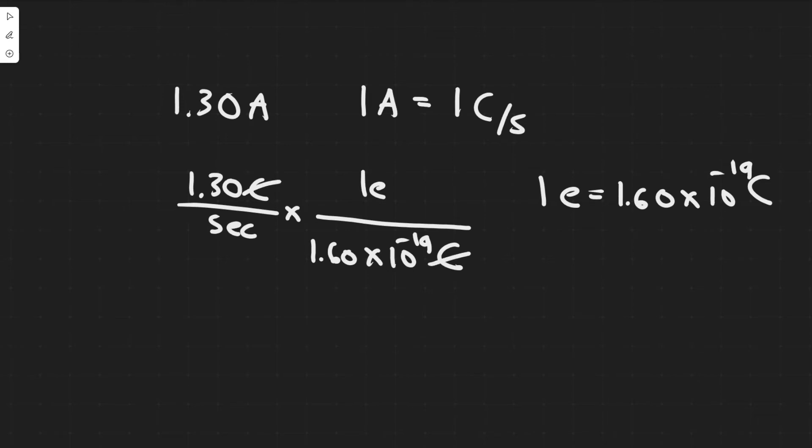These are going to cancel. You're essentially just dividing by this value because we'll have electrons per second. So you're going to do 1.30 divided by 1.60 times 10 to the minus 19.